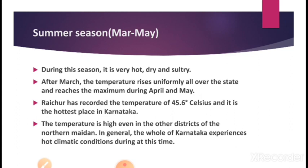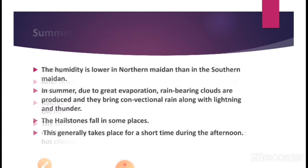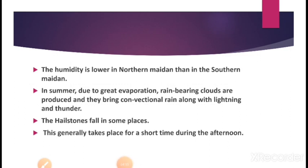Because of the lack of forest, the Northern Maidan records both the highest and lowest temperatures. Humidity is lower in the Northern Maidan than in the Southern Maidan. Northern Maidan receives low rainfall because rainfall requires high temperature along with high humidity. The Northern Maidan has high temperature but not sufficient humidity, which is why it receives the lowest rainfall in the state.